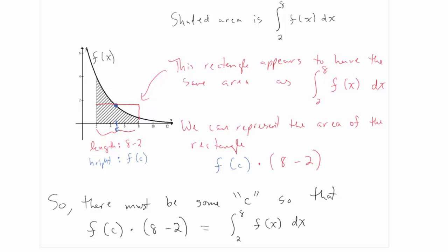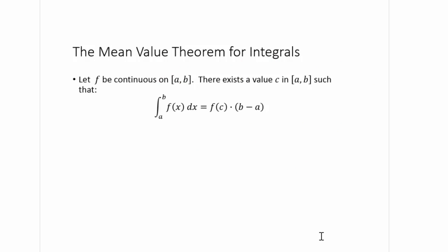So there must be some c such that f of c times 8 minus 2 equals the integral from 2 to 8 of f of x dx. This doesn't tell us how to find c — it just tells us that c exists. This is called the mean value theorem for integrals. It says: let f be a continuous function on a closed interval [a, b]. There exists a value c in [a, b] such that the integral equals f of c times b minus a — the area of a rectangle with height f of c equals the area under the curve.